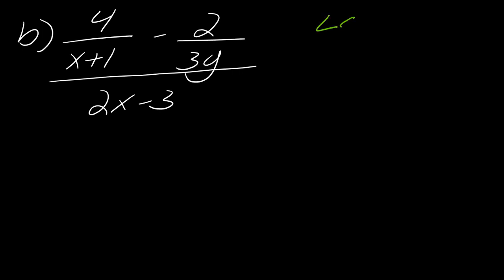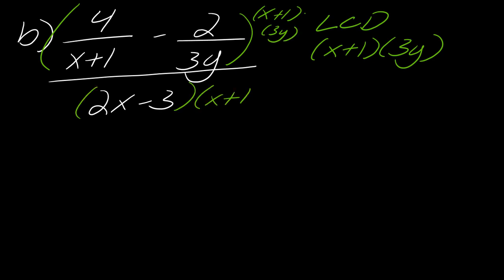The LCD here is going to be x plus one times three y. So this is literally what I'm going to multiply everything by. I'm going to multiply this by x plus one times three y, and then I'm going to do that also on the bottom. So x plus one times three y.